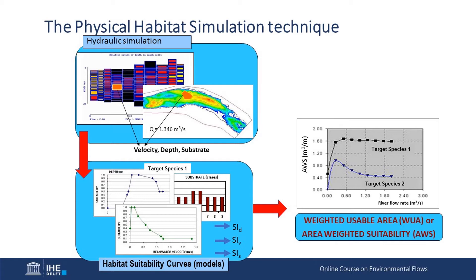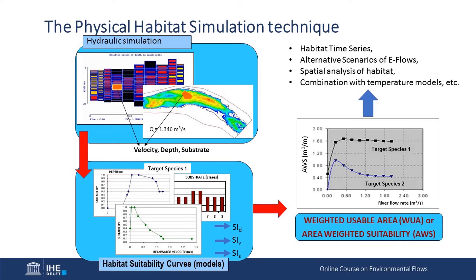The last step is the generation of these curves, but in the IFIM framework we can feed other processes, like the habitat time series. We can calculate the alternative scenarios of environmental flows and estimate the Weighted Usable Area habitat values under different alternative scenarios. We can analyze the habitat and its distribution in the river based on two-dimensional hydraulic models, and we can combine this information with temperature models that will tell us if habitat in terms of depth, velocity, and temperature can provide suitable conditions for some species — for example, under scenarios of climate change.